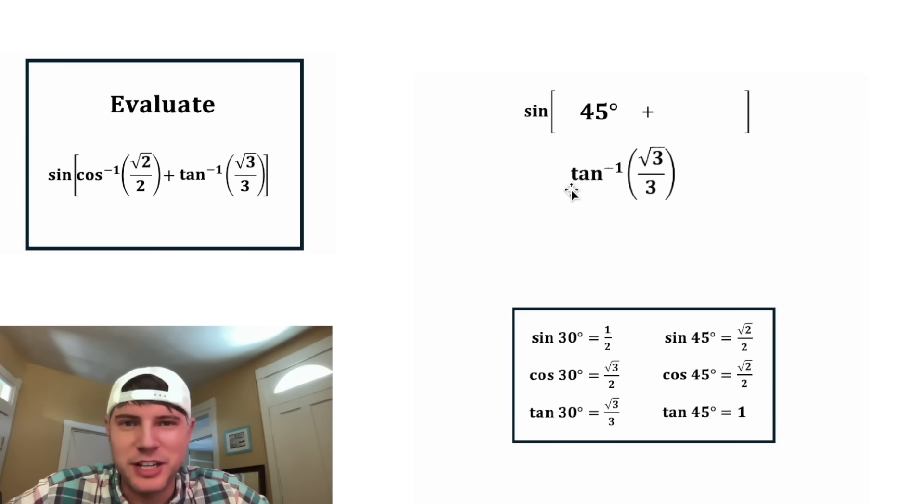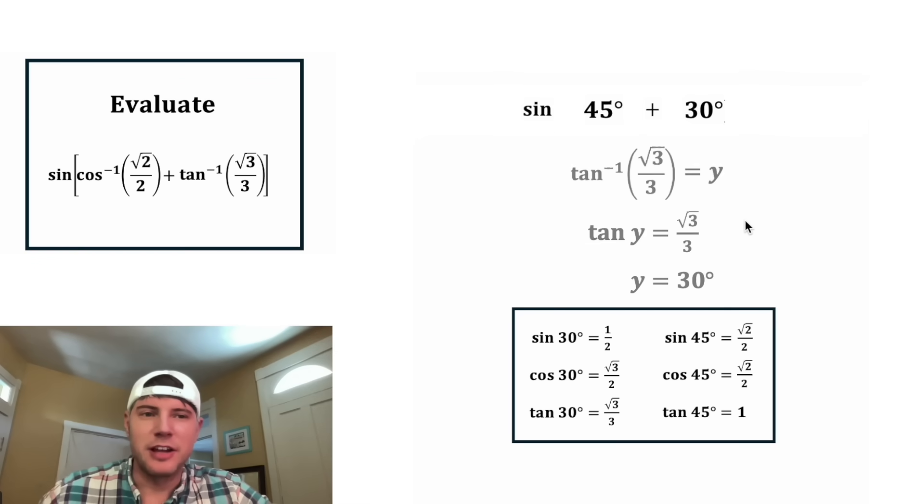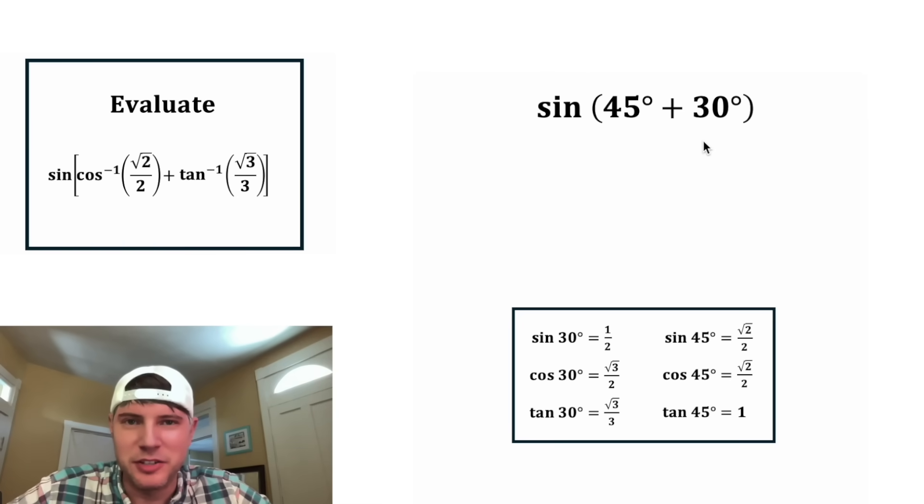And then we can do the same thing for tangent inverse of root three over three. We can set this equal to y. And we want to figure out what is y if tangent of y is equal to square root of three over three. Well, let's check down here. The tangent of 30 degrees is root three over three. So y is equal to 30 degrees. And we can update this y right here. So now we're trying to find sine of 45 plus 30 degrees.